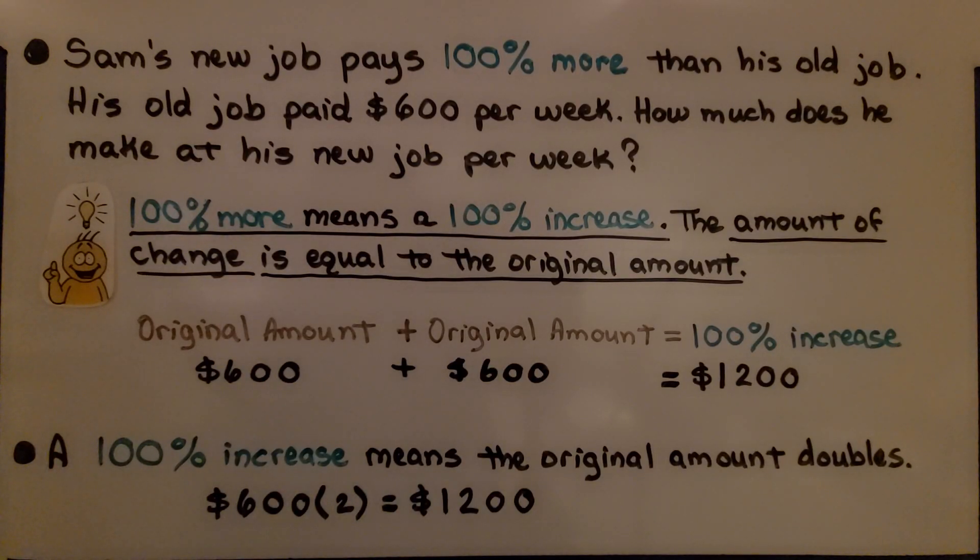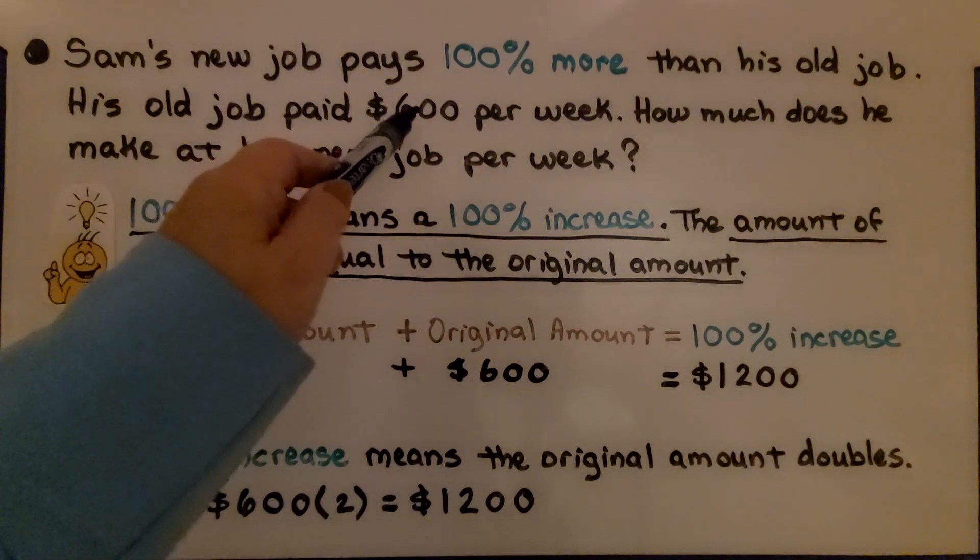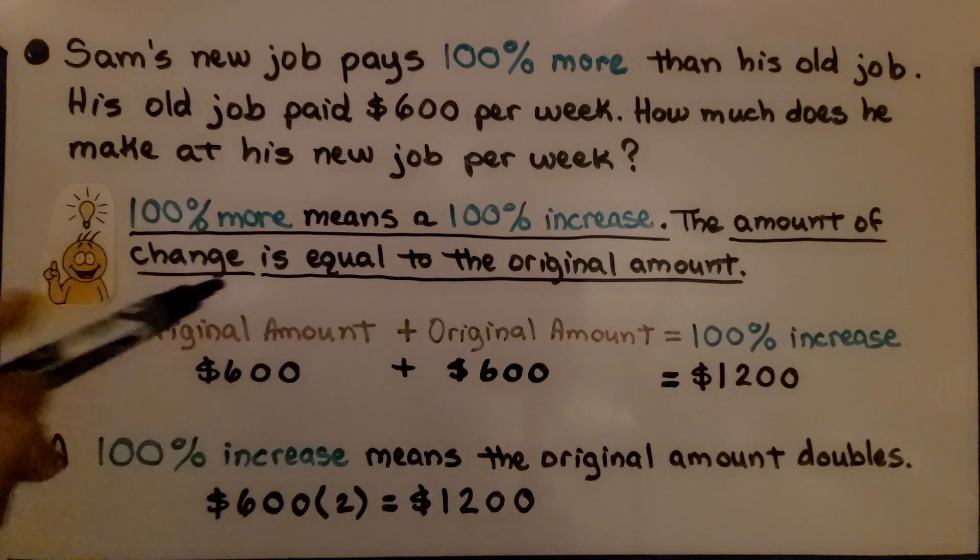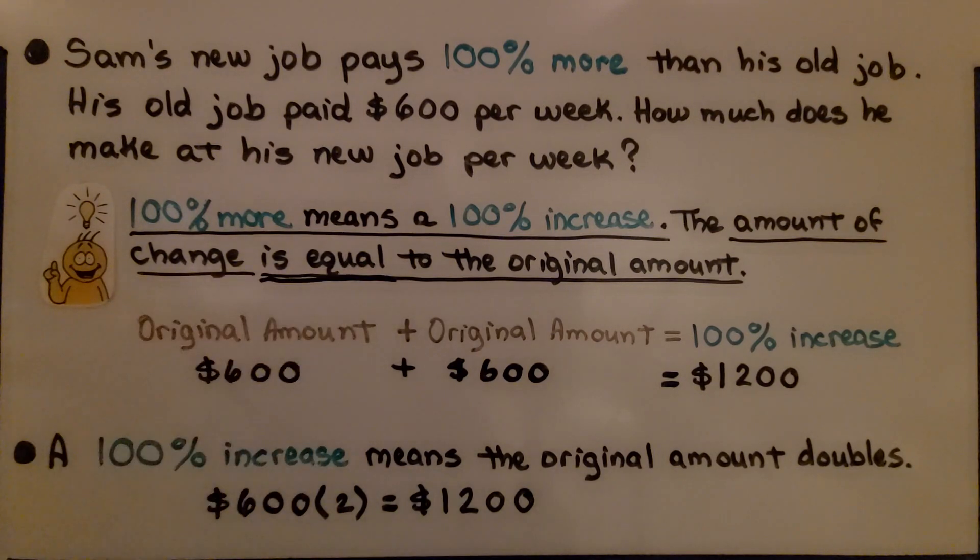Sam's new job pays 100% more than his old job. His old job paid $600 per week. How much does he make at his new job per week? Well, 100% more means a 100% increase. The amount of change is equal to the original amount.